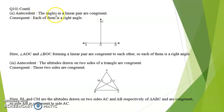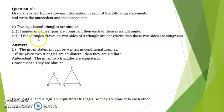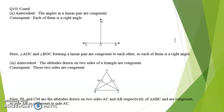Antecedent: the angles in a linear pair are congruent. Consequent: each of them is a right angle, and this is the figure to represent it. Third: if the altitudes drawn on two sides of a triangle are congruent then those two sides are congruent. Antecedent: the altitudes drawn on two sides of a triangle are congruent. Consequent: those two sides are congruent, and this is the figure showing the altitudes on two sides.